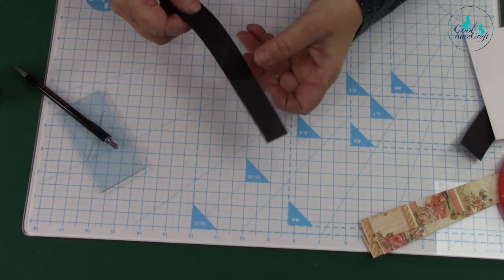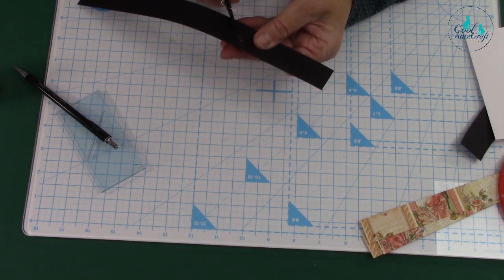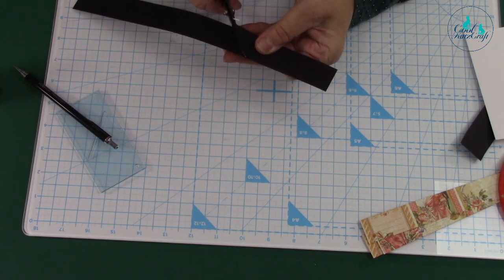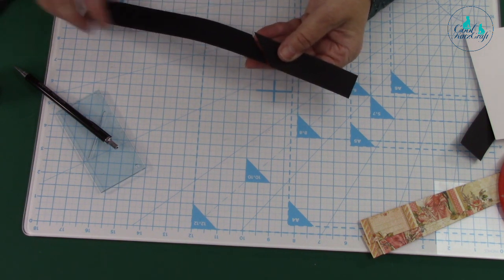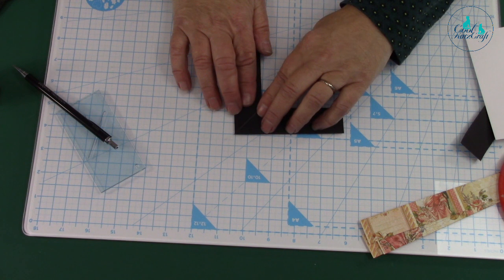Just do that across there. You can use a trimmer or you can cut there. Turn that over and you've got a perfect mitre.